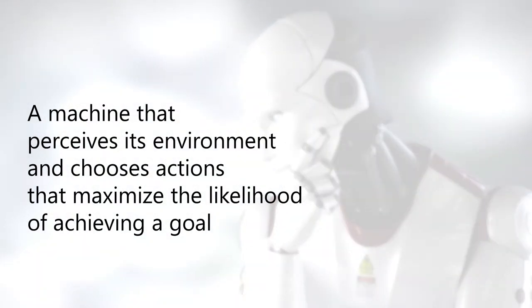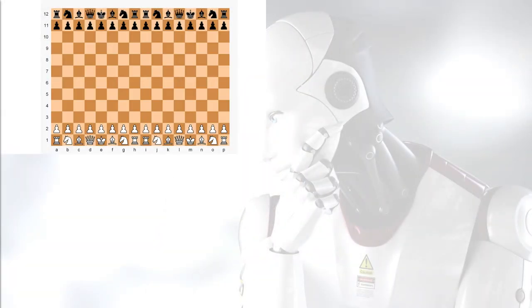An AI is any machine that perceives its environment and chooses actions that maximize the likelihood of achieving a goal of some kind. Essentially, an AI is just a machine that takes data as input and produces the best possible output given what it currently knows. Some examples of AI include computers that can play chess, robots that can vacuum your floor,